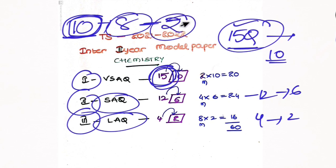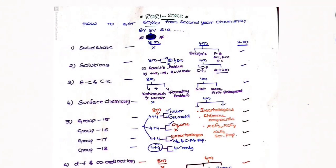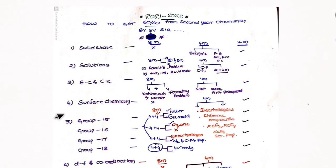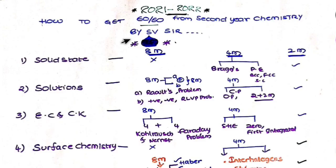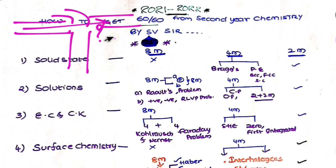This is the golden choice for getting 60 out of 60. So let us move to how to get 60 out of 60. First, we have a correct way - whenever you select a particular way, that will decide your marks. You have to choose a shortcut way.